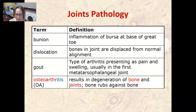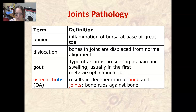Osteoarthritis results in the degeneration of bone and joints because of inflammation. Osteo is bone, arthro is joints. Once you have osteoarthritis, bones rub against bones — bone on bone — instead of cartilage with joint fluid in between. Osteoarthritis tends to happen in joints that have suffered damage, especially from a sports injury, and later in life those joints can develop osteoarthritis.